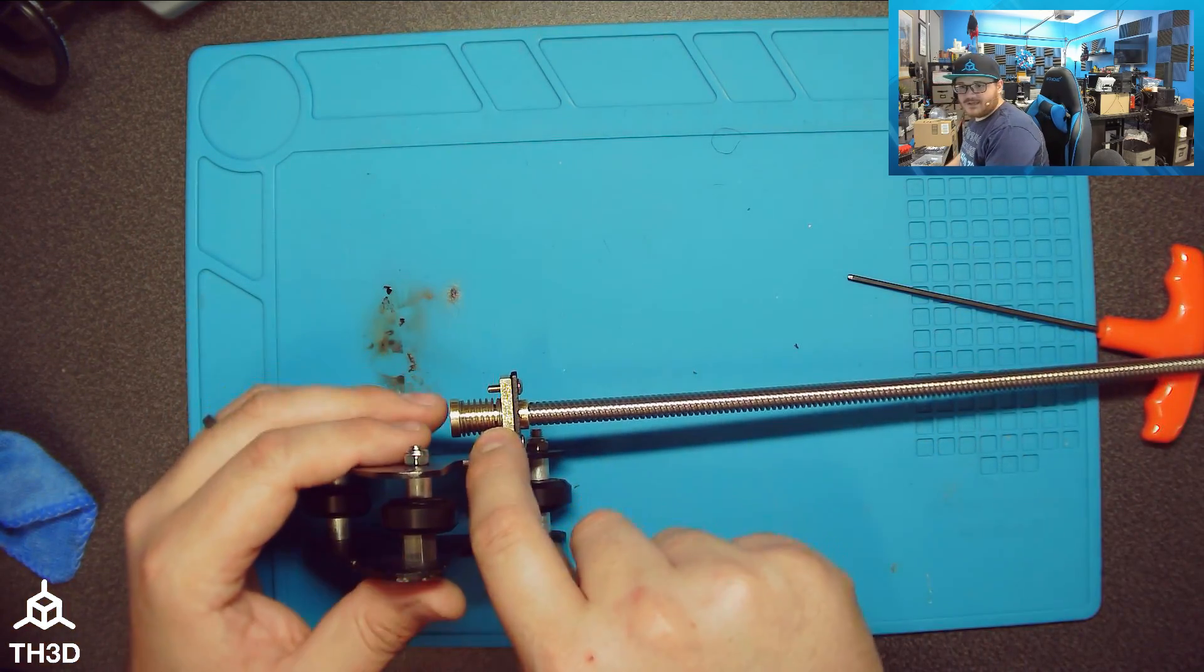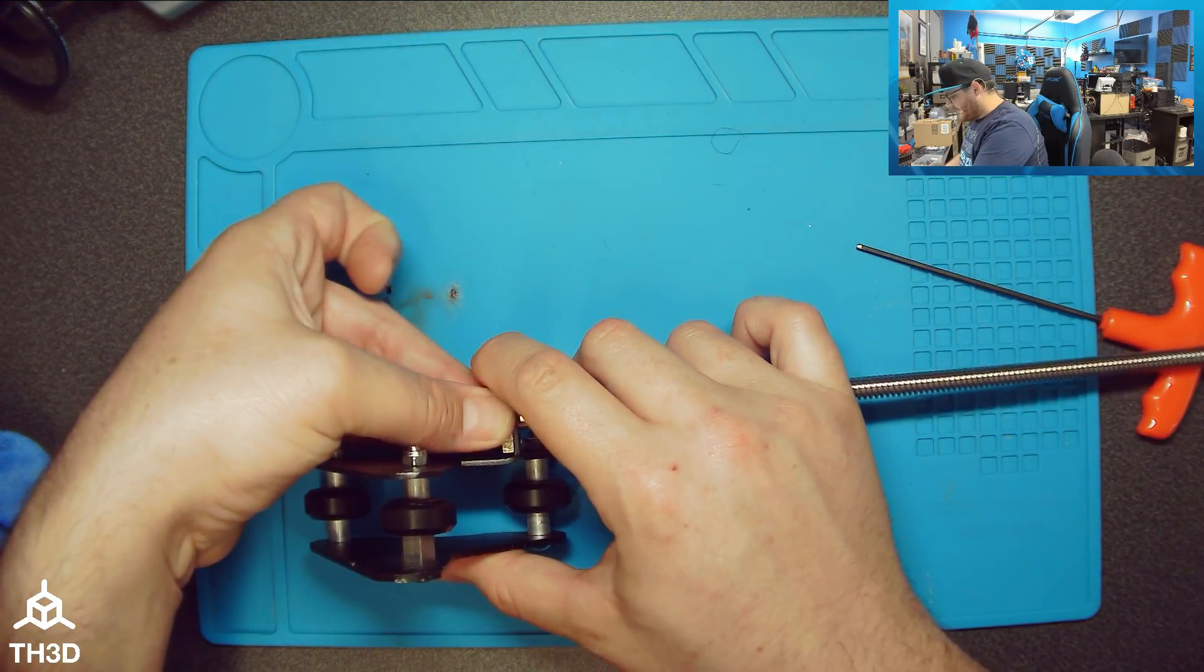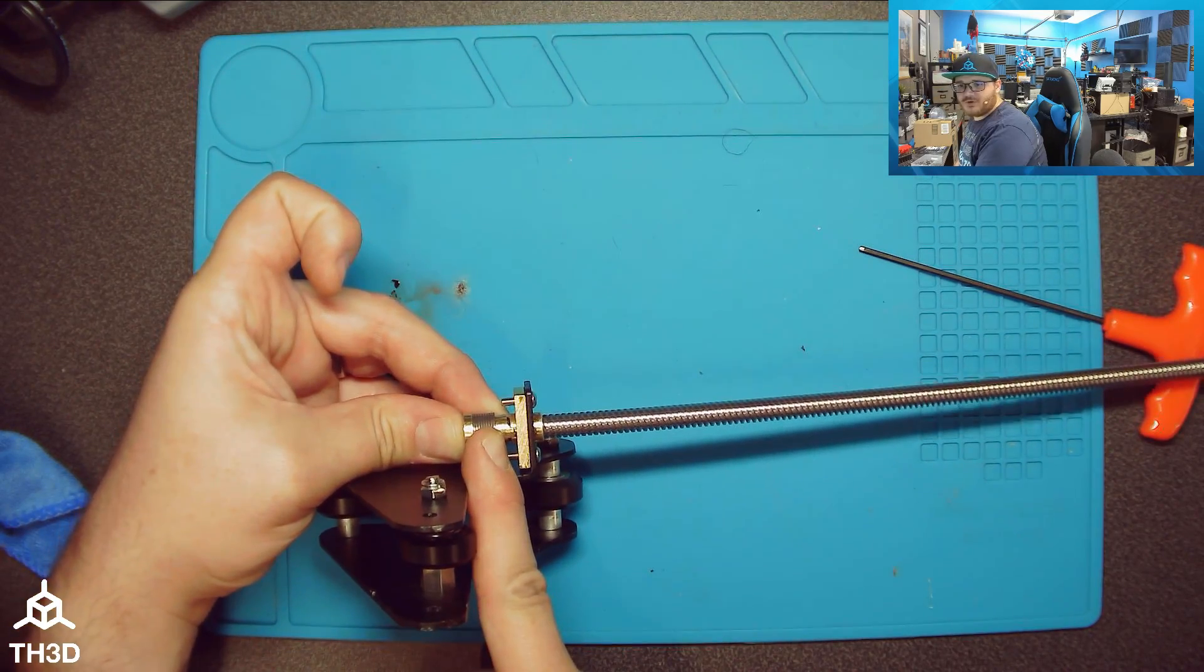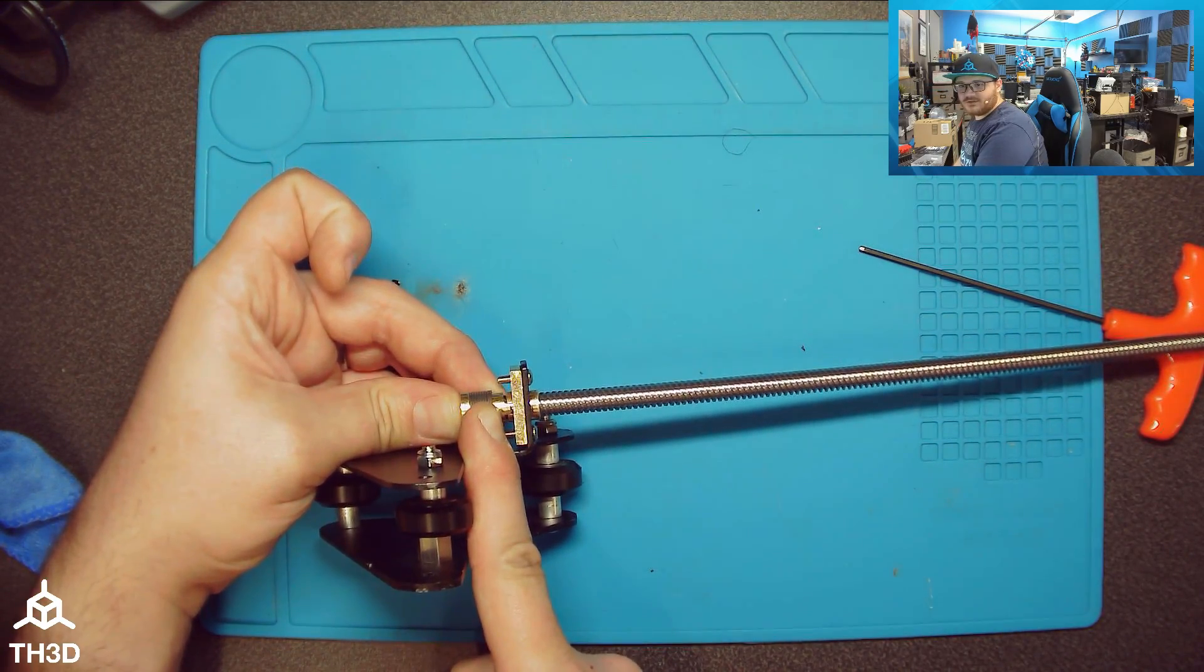When you do this, you're going to have a slight gap between the top piece and the bottom piece. If I pull the spring back here, you'll see what I'm saying. This is how it should be if it's correctly installed.